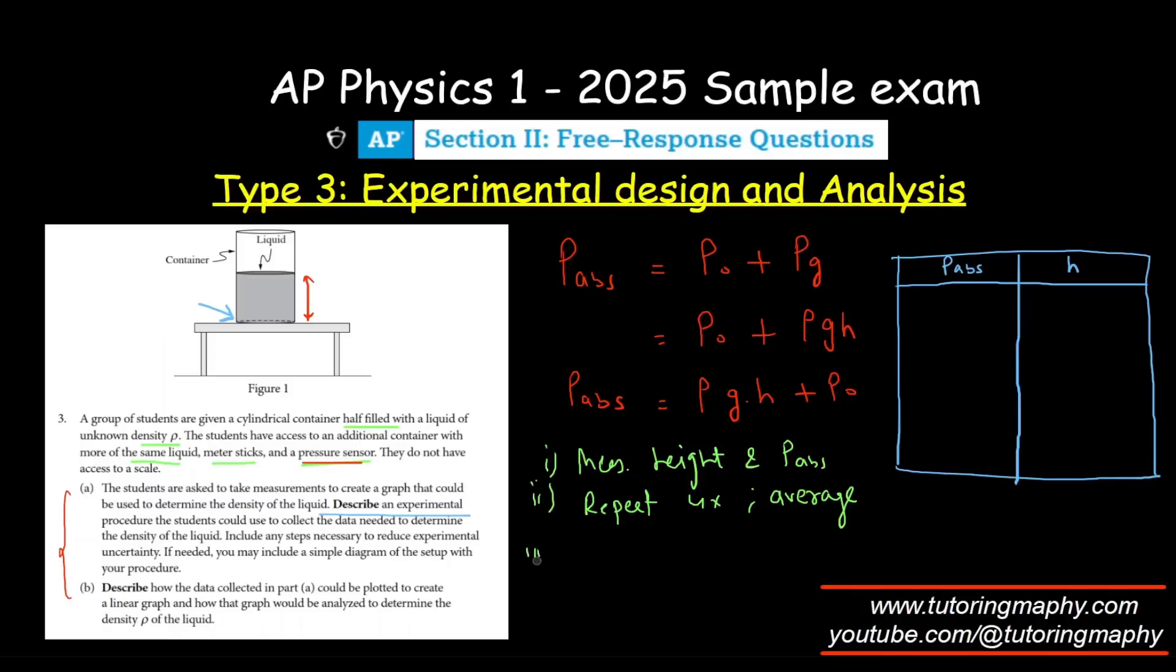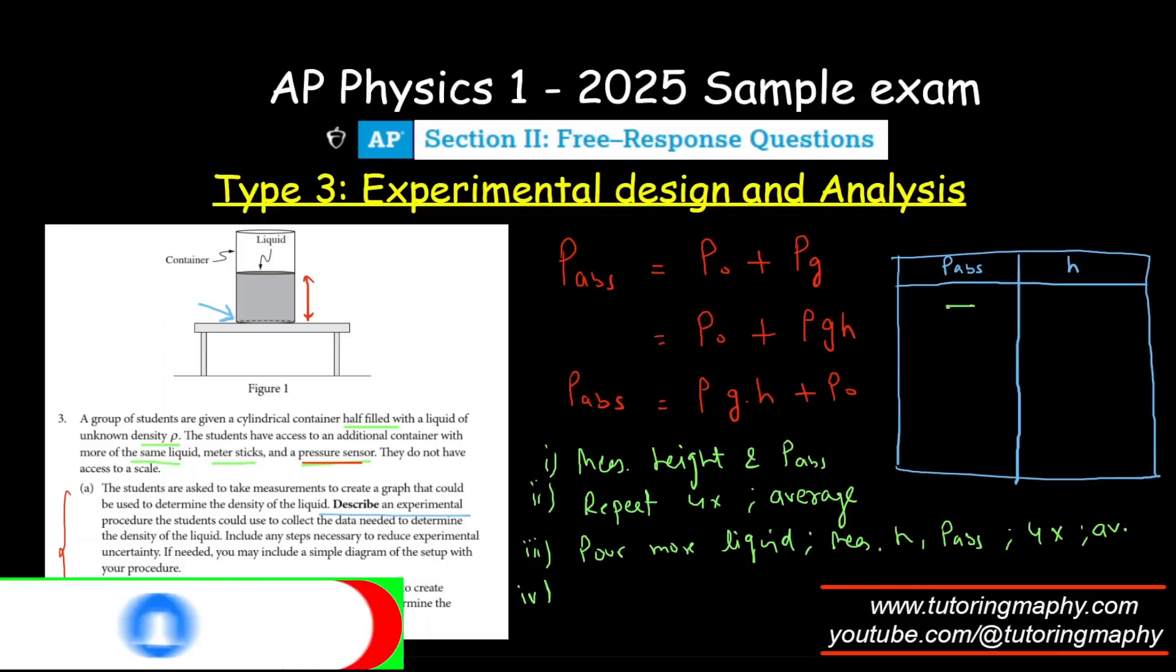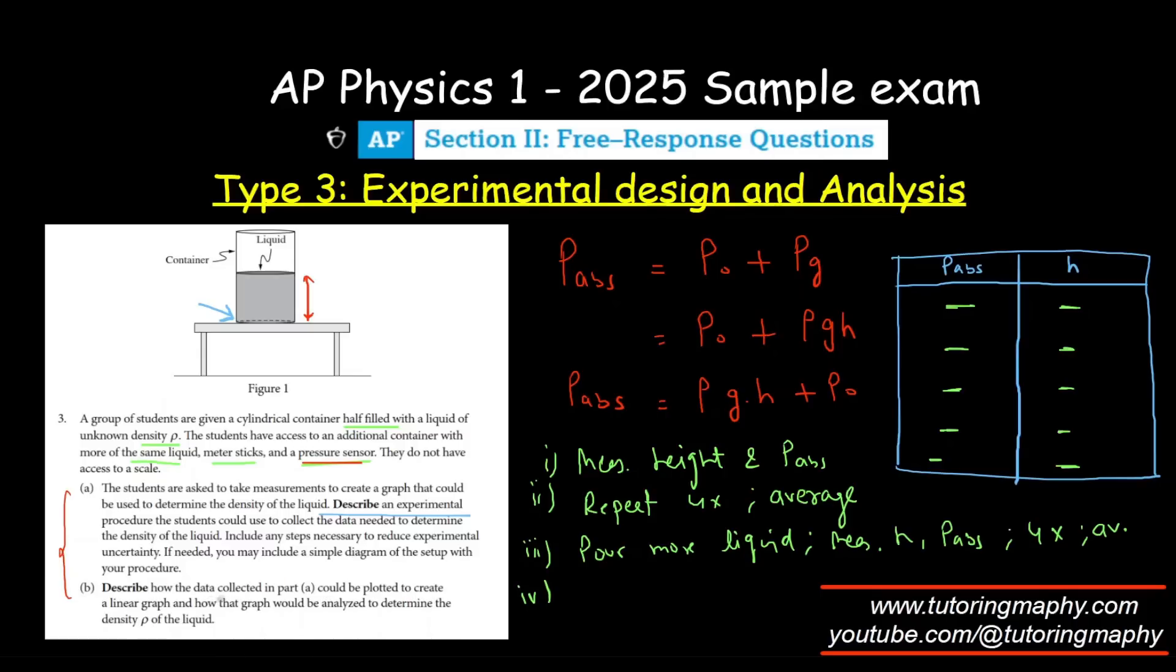Next step is to pour more liquid to another height and do the same procedure. Pour more liquid, once again measure height and absolute pressure at the bottom, repeat four times and take average. Repeat this for at least five readings, so five different heights. We will have absolute pressure and height: reading one, reading two, reading three, reading four, and reading five.